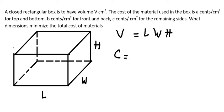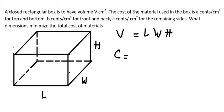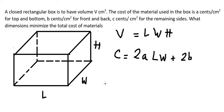For the total cost: we have a cents per square centimeter for the top and bottom. The top is this face and the bottom is this face — because we have two faces, we have 2a multiplied by LW. The second term is 2b multiplied by LH for the front and back. And the last term is 2c multiplied by WH for the remaining sides.